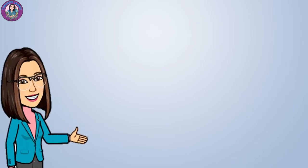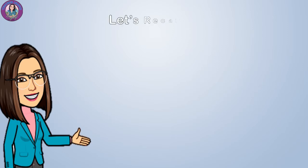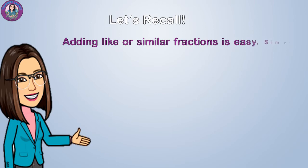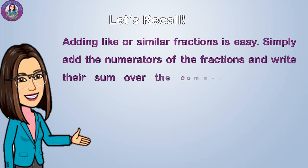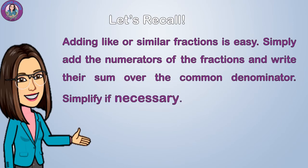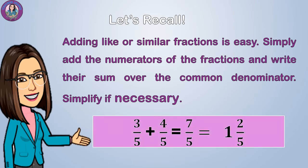How were you able to get the correct answer? In your previous lesson, we learned about adding similar fractions. Let's recall. Adding like or similar fractions is easy — simply add the numerators and write their sum over the common denominator, then simplify if necessary. Like we have three-fifths plus four-fifths equals seven-fifths, and one-and-two-fifths is the simplified answer.